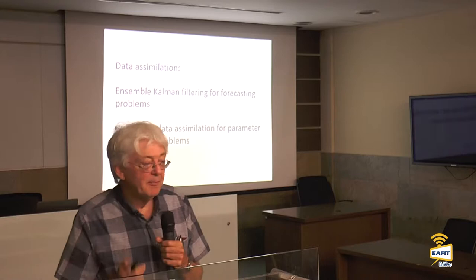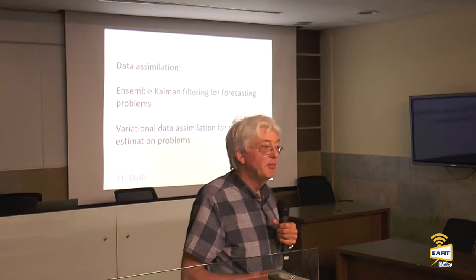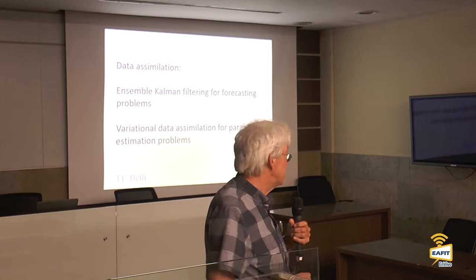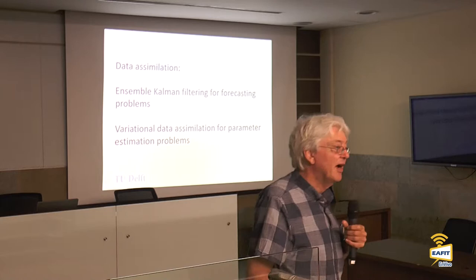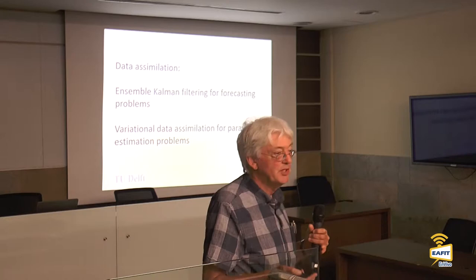There are two methods and we implement them both — they both have their pros and cons. One is the Ensemble Kalman filter, where you create a number of model simulations to represent the uncertainty. Variational data assimilation is more for parameter estimation — if the uncertainties are only specific parameters, then this approach is very attractive. Parameters could also be the initial condition, for instance. That's what is done in numerical weather prediction.